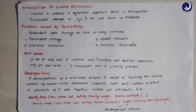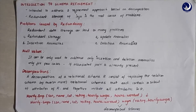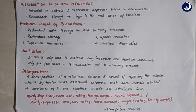Redundant data storage is the root cause of many problems. There are four important problems caused by redundancy: redundant storage, repetition of data, and three types of anomalies — insertion anomaly, updation anomaly, and deletion anomaly. These anomalies refer to ambiguity or confusion, and can be thought of as insertion problems, deletion problems, and updation problems.